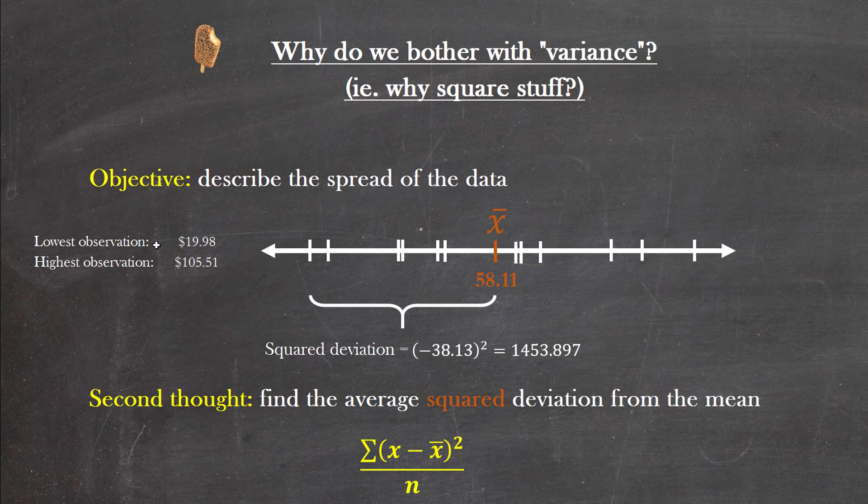So we're going to have to deal with the average squared deviation from the mean, which might look something a little bit like this: the sum of (x minus x̄)² all divided by n, which is the number of observations. You'd think it'd be that, except of course you saw in the formula on the previous sheet it's actually divided by n minus 1. That's where we get to our second question.